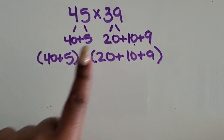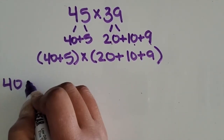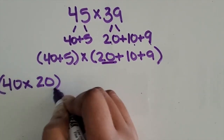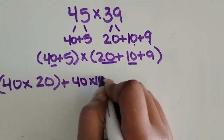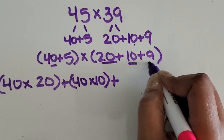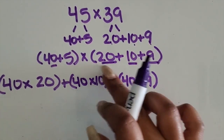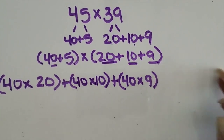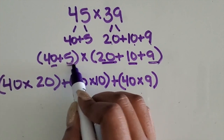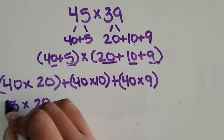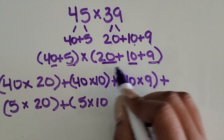We're going to distribute these separate factors with all of the factors in our second number. So 40 times 20, plus 40 times 10, plus 40 times 9. Now I'm going to do 5 multiplied by each of these numbers in the parentheses. Since it's going to go to a second line, I'll write all the 5-times expressions there: 5 times 20, plus 5 times 10, plus 5 times 9.